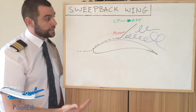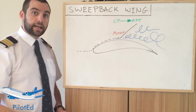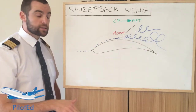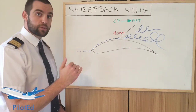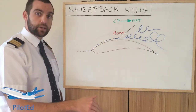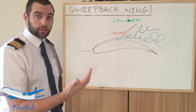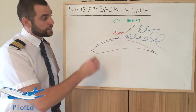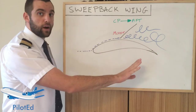What does that cause? It causes Mach tuck — you may have heard of that. The problem that early aircraft encountered with straight wings was that as they reached those speeds, they would have a tendency to dip the nose. That's called Mach tuck, and it's because that center of pressure moves aft.